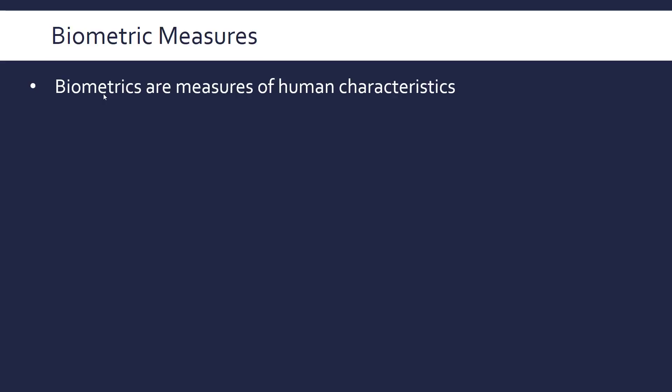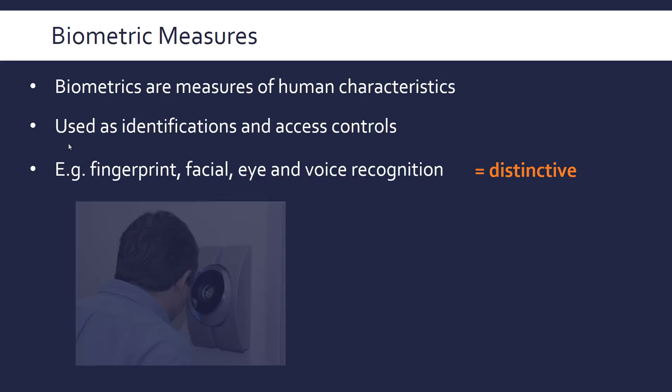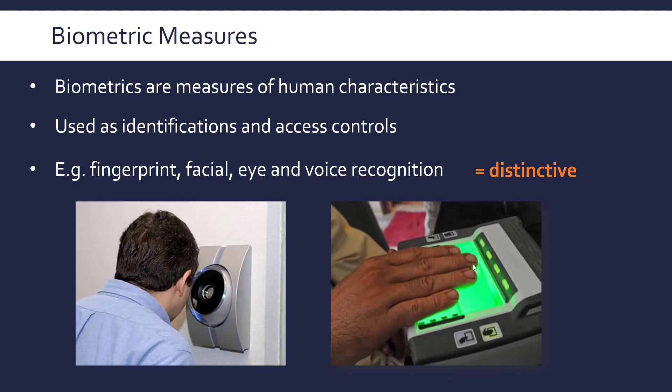A modern security measure comes in the form of biometric measures. Biometrics as a category are measures of human characteristics, and in this context they are used as identification and access controls — like fingerprint scanners, facial scanners such as Apple's Face ID, eye scanners, retina scanners, and voice recognition. These are distinctive characteristics that humans have. Here's a retina scanner and a multiple fingerprint scanner.